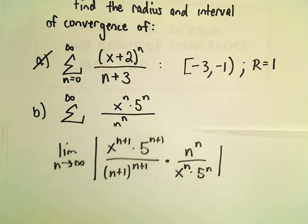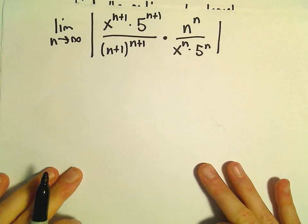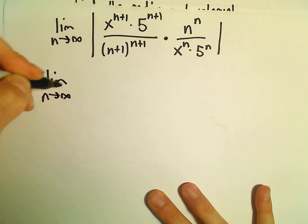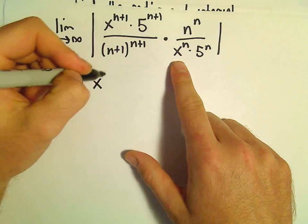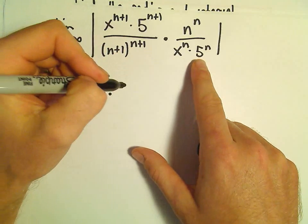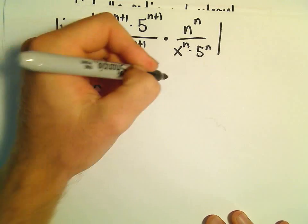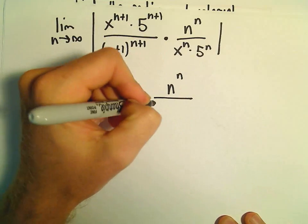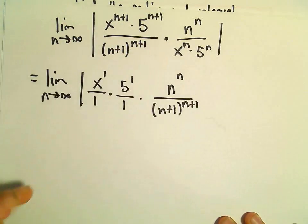And now we get to just try to simplify this and make some sense out of all the limits. So we've got the limit as n goes to infinity. x to the n plus 1 over x to the n will leave us with x to the first. 5 to the n plus 1 over 5 to the n, that's going to leave us with 5 to the first. And then we have this n raised to the n over n plus 1 raised to the n plus 1 power.